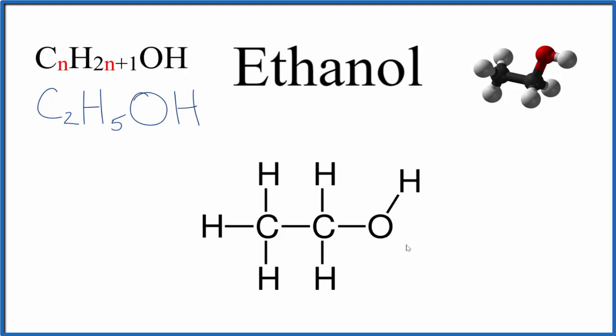this alcohol group that makes ethanol an alcohol. So if you count these up, you'll get C2H5OH or C2H6O, depending how you write it.